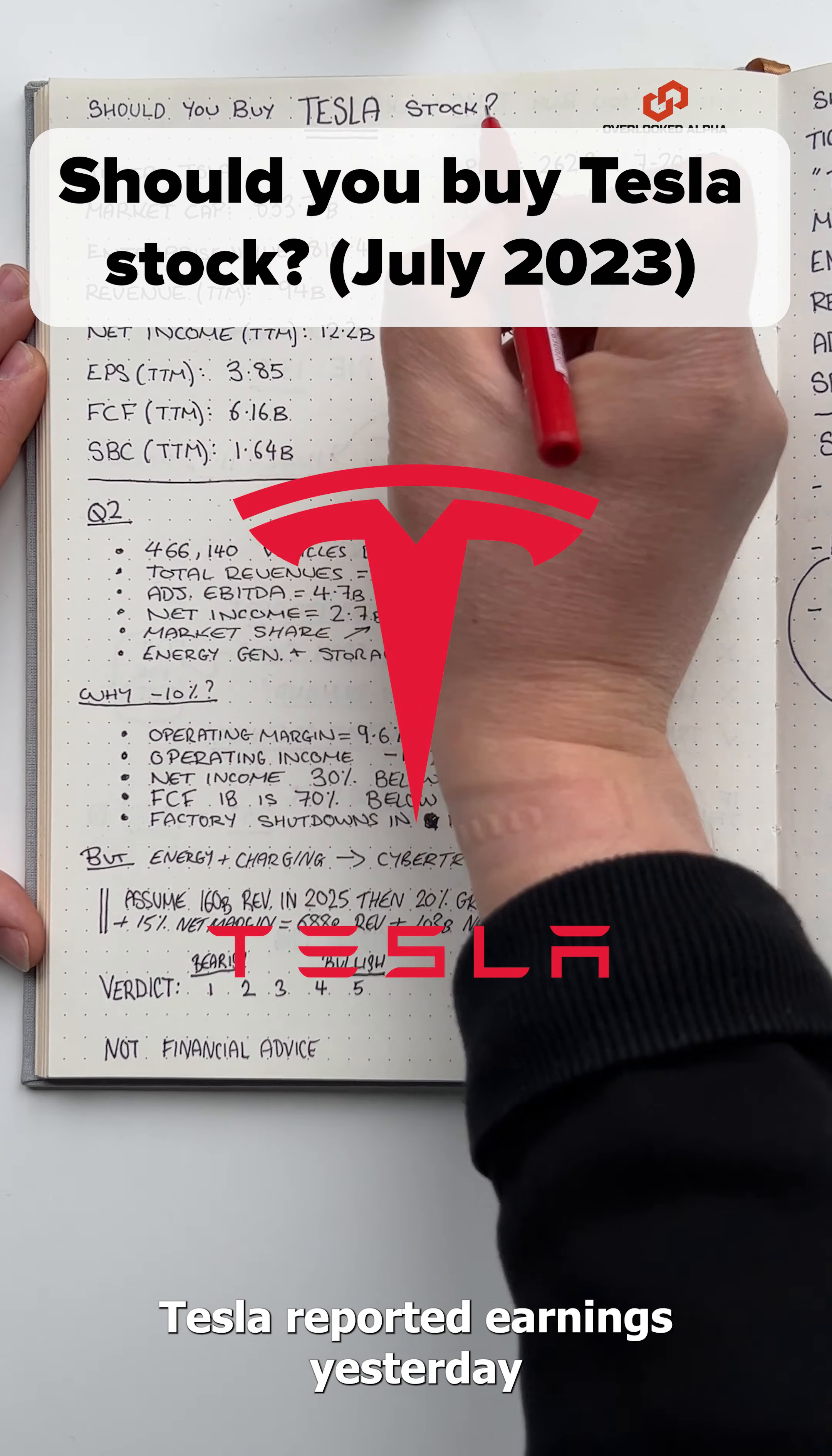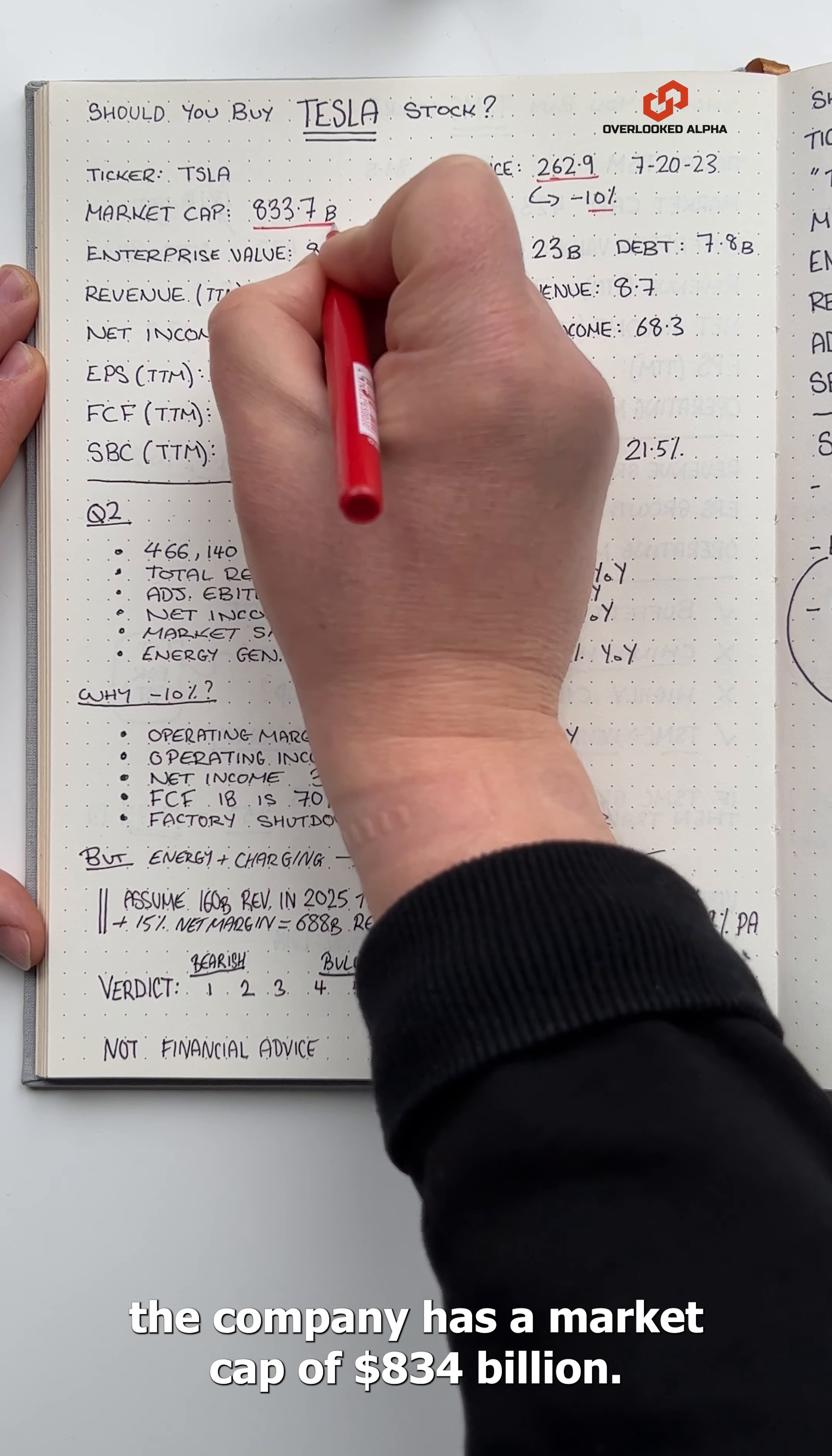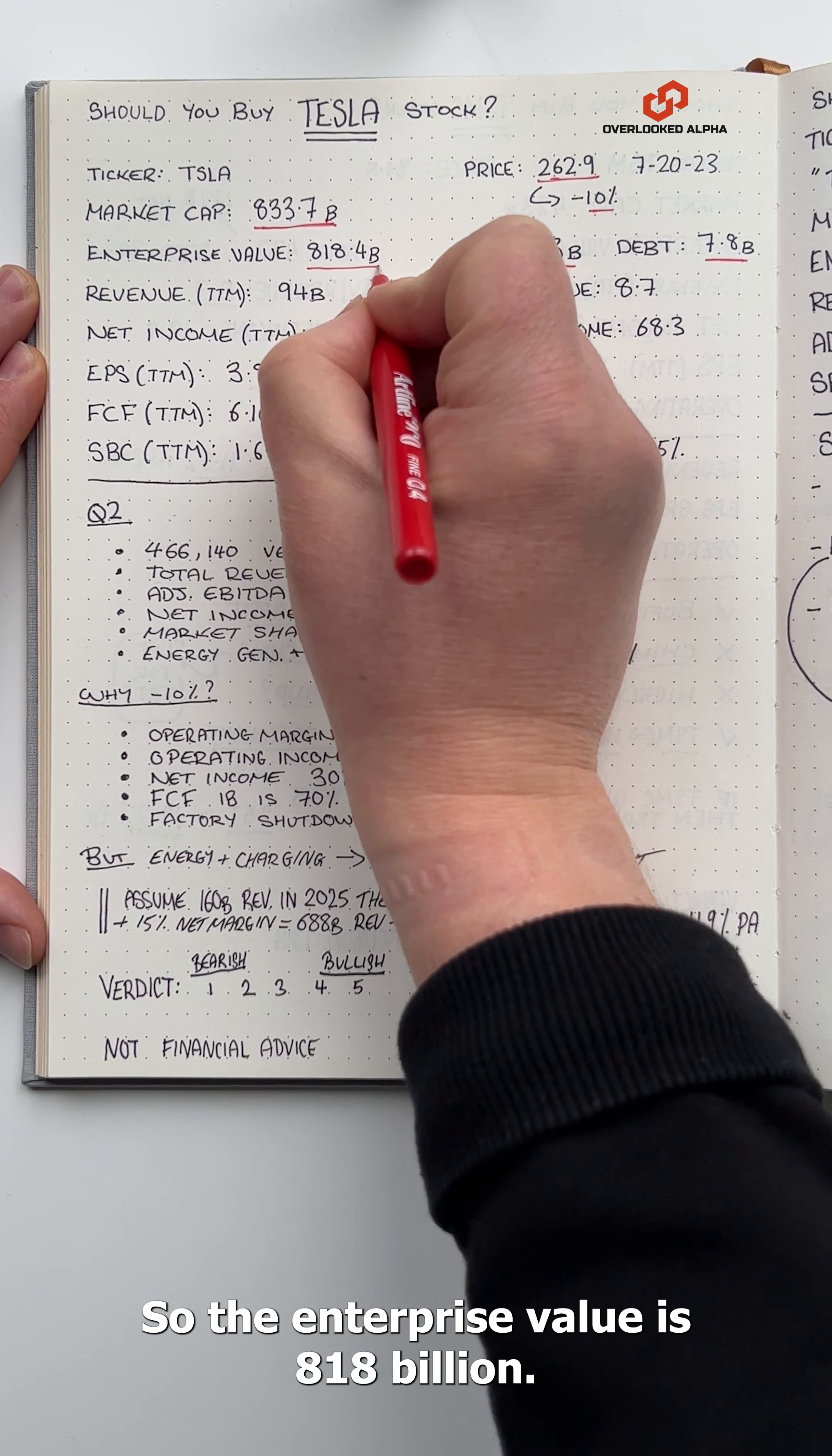Tesla reported earnings yesterday and the stock fell 10%. Based on the latest share price, the company has a market cap of $834 billion. It's got $23 billion of cash and $7.8 billion of debt, so the enterprise value is $818 billion.